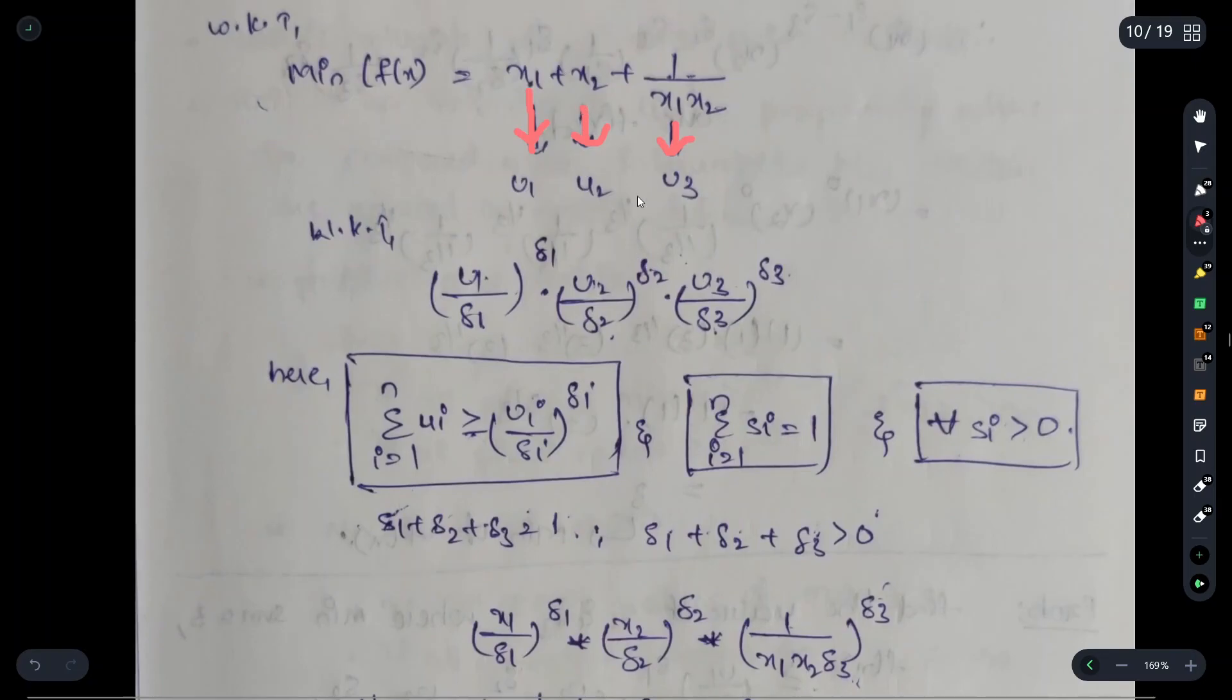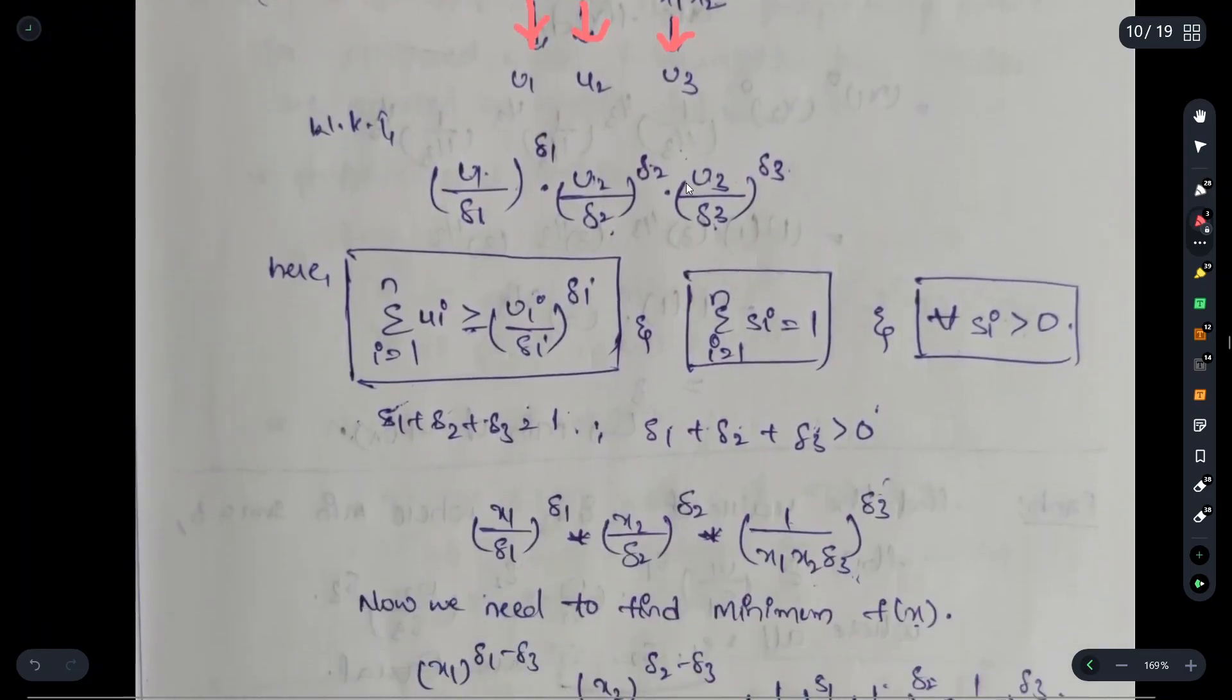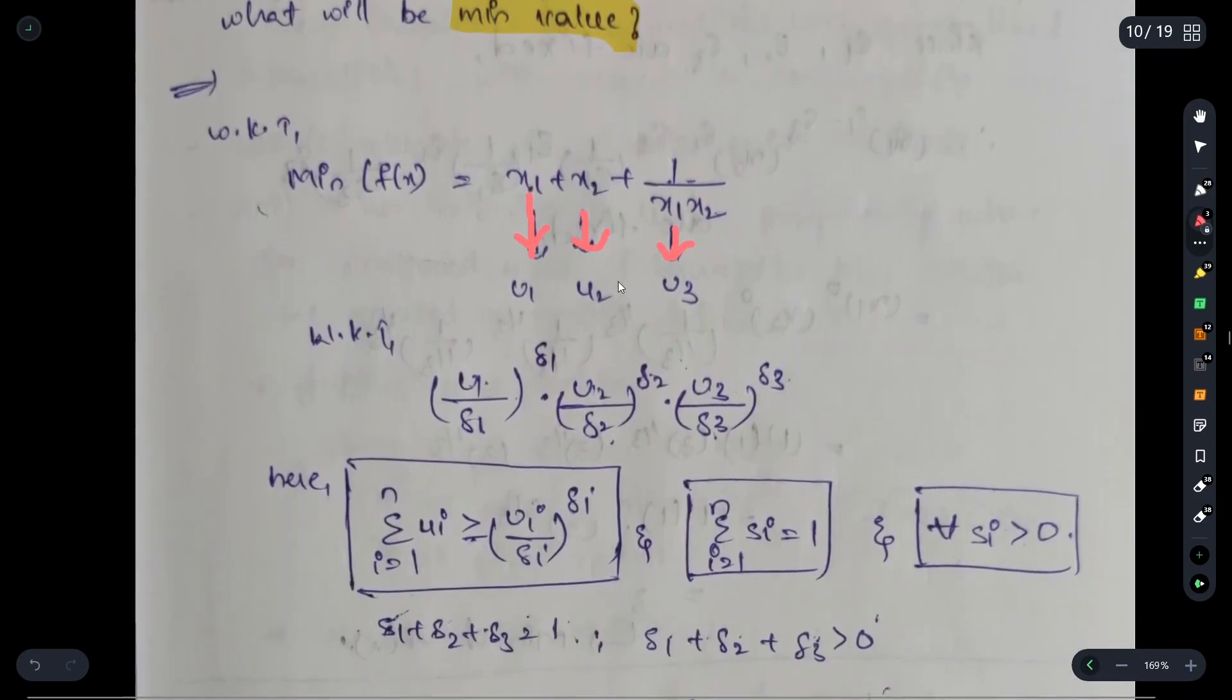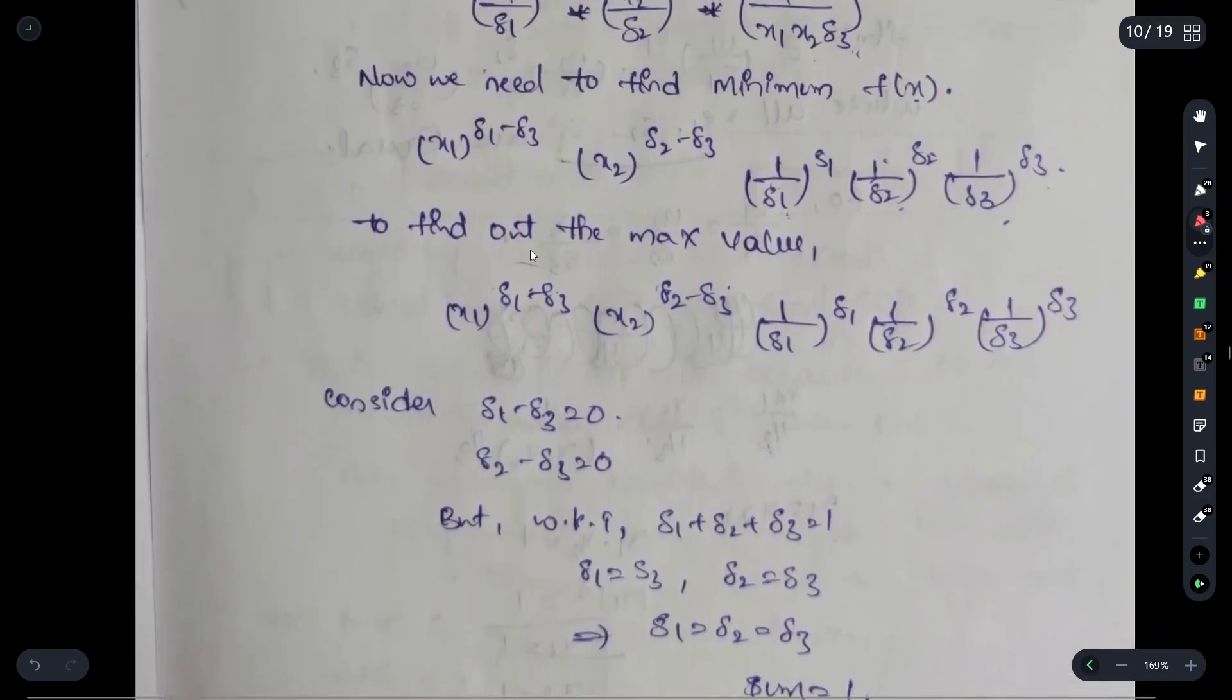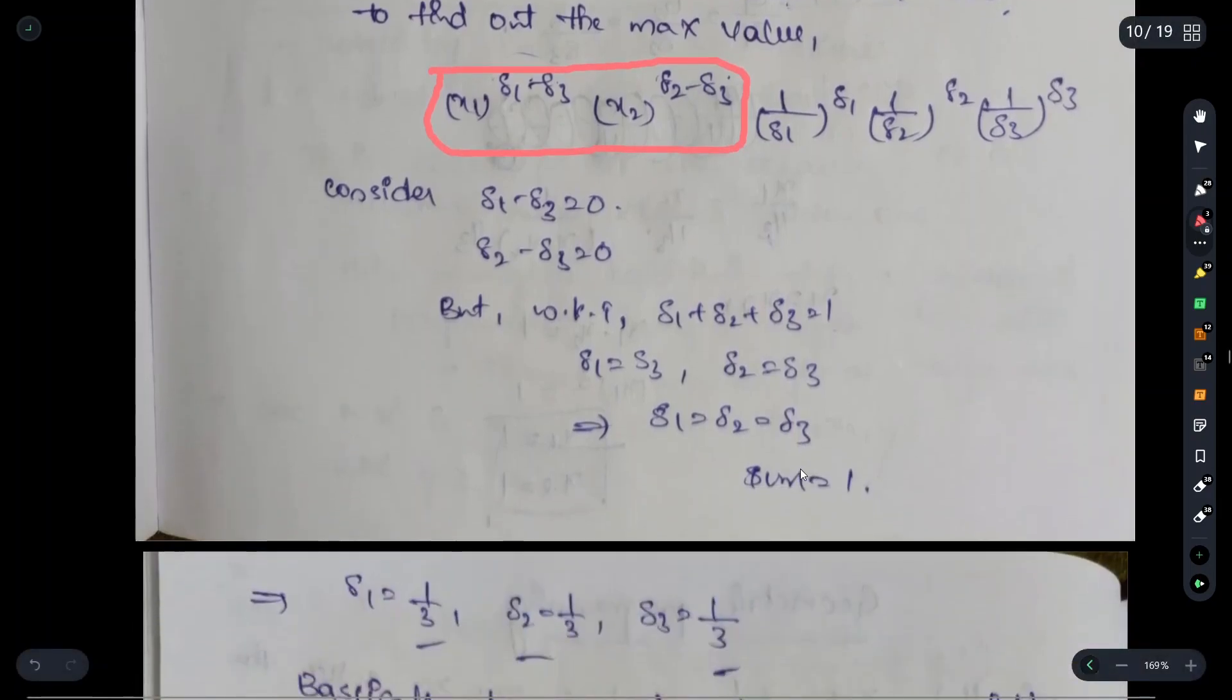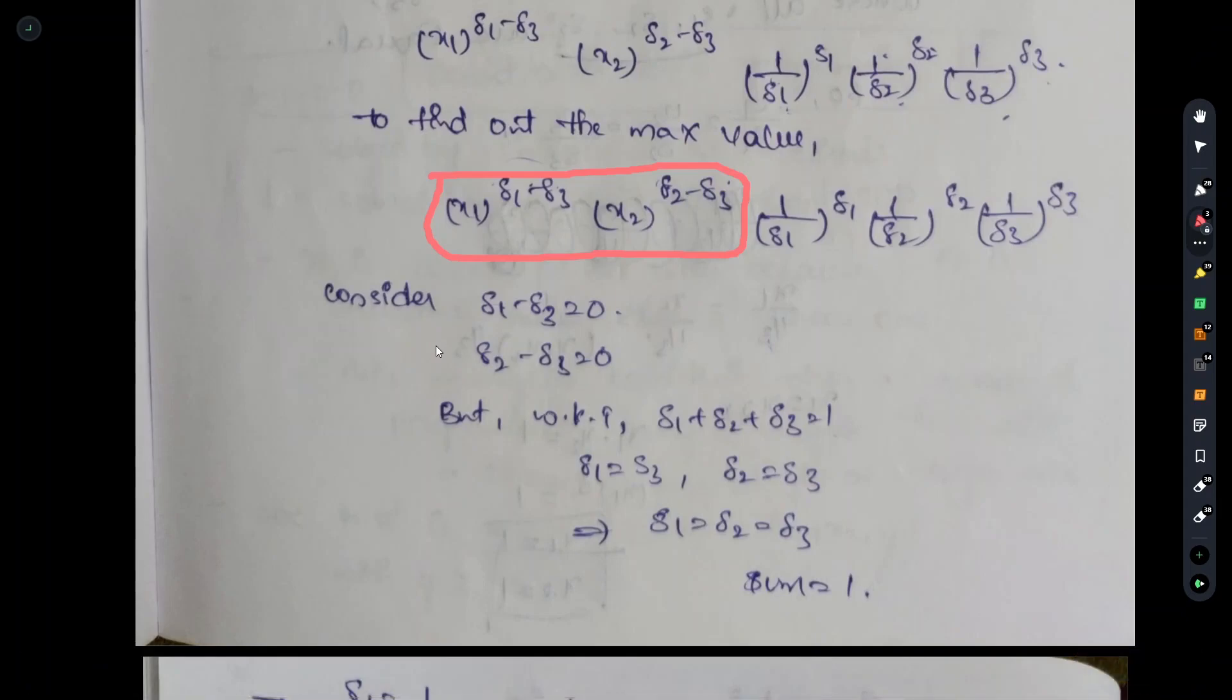u1 by lambda 1 to the power of lambda 1 into u2 by lambda 2 to the power of lambda 2. The i value represents it is maintaining consistency. When we write this with u1, u2, u3 values in the equation: x1 to the power of lambda 1 minus lambda 3, x2 to the power of lambda 2 minus lambda 3. When bases are equal, exponents should be computed. So lambda 1 minus lambda 3 equals 0, lambda 2 minus lambda 3 equals 0.